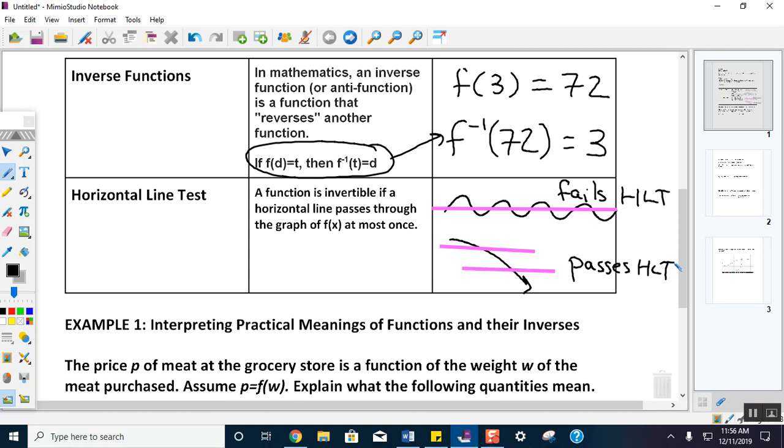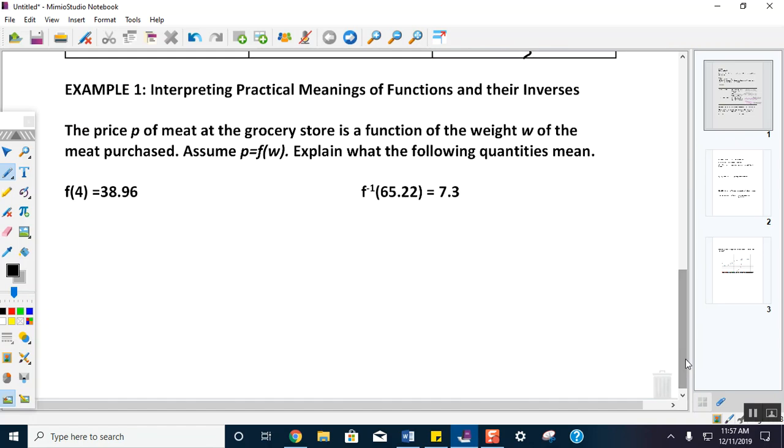Let's look at some practical meanings of functions and their inverses. Example one says interpreting practical meanings of functions and their inverses. The price P of meat at the grocery store is a function of the weight W of the meat purchased. Assume P equals F of W. This is just saying my price is a function of weight. Explain what the following quantities mean.